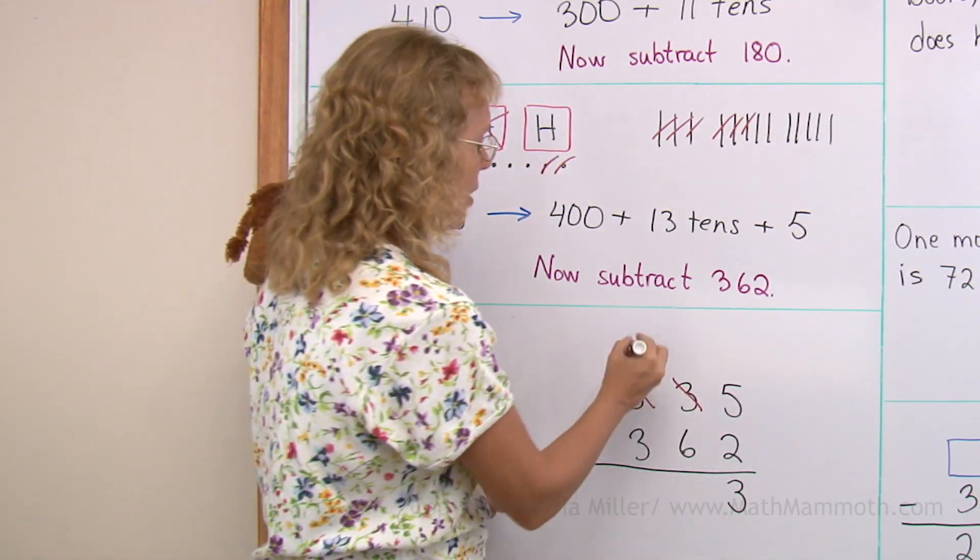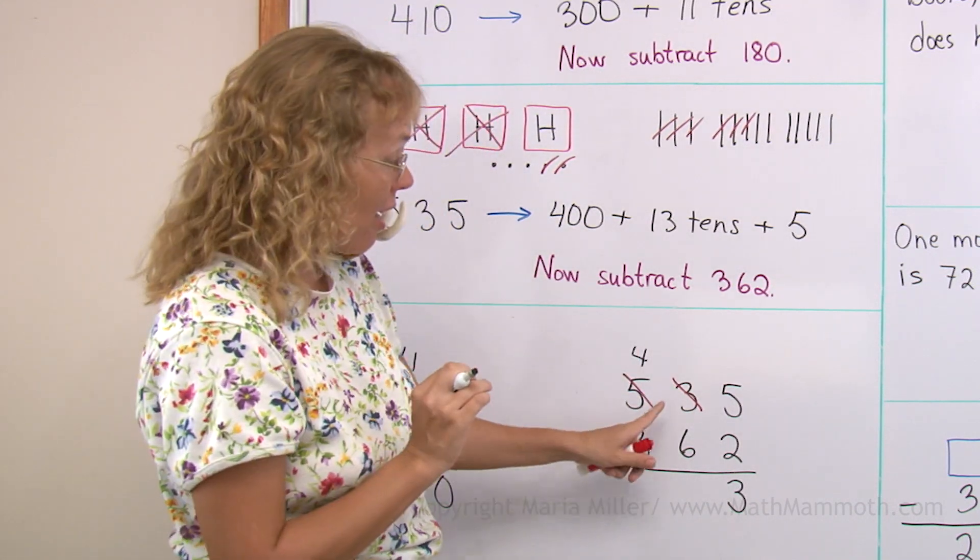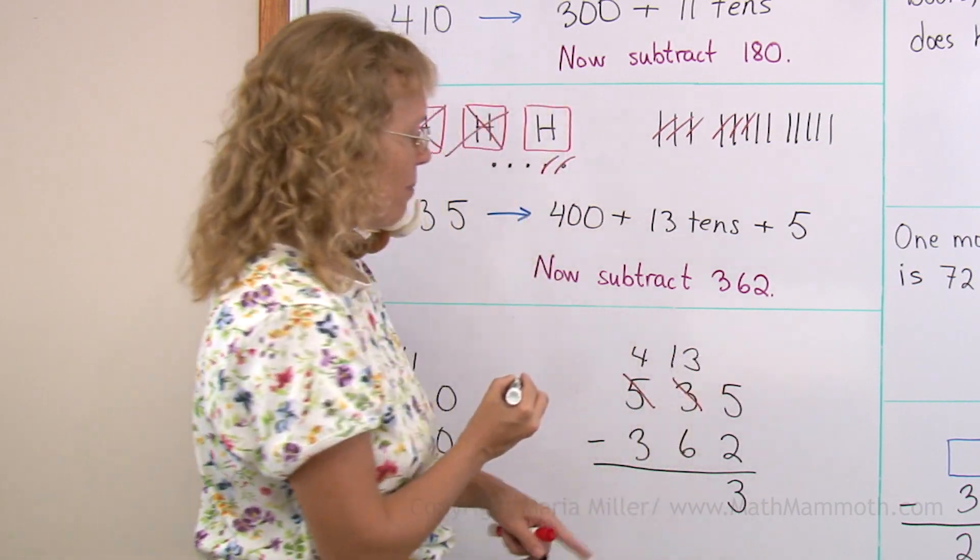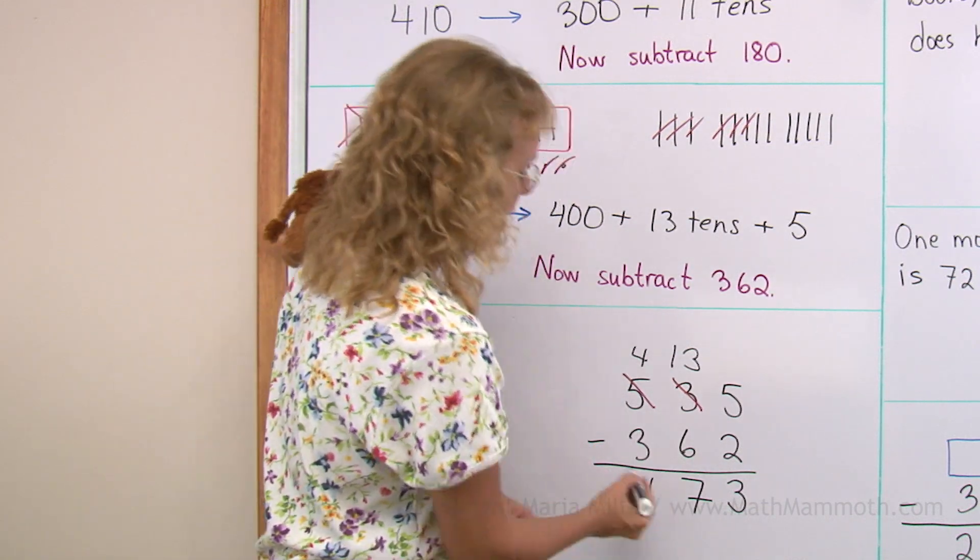Take one of the hundreds. Leaves four hundred. And the hundred becomes ten tens. There are already three tens. So we get thirteen tens. Thirteen minus six. Seven. And four minus three. One.